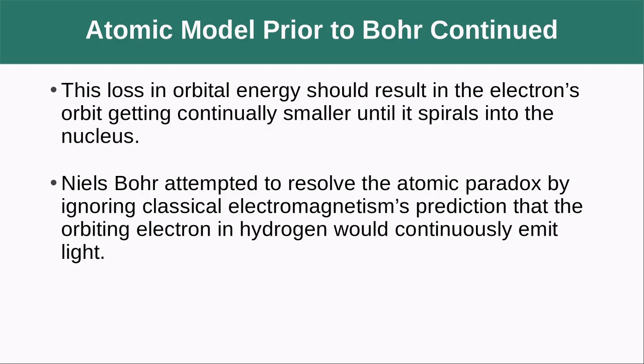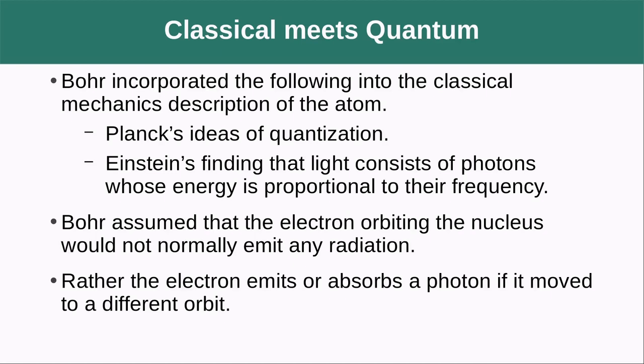So he attempted to resolve this atomic paradox by ignoring classical electromagnetism's prediction that the orbiting electron in hydrogen would continuously emit light. So he said it's not going to shoot off light. Instead, he's bringing in a lot of ideas from Planck about quantization and the idea that the light consists of photons. And he starts to assume that the electron orbiting the nucleus would not normally emit any radiation.